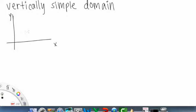So vertically simple domain. All right, so this is an xy plane. And when you have something that's vertically simple, we have some functions, two functions of x. So two functions of x could be something like that, and something else like that.